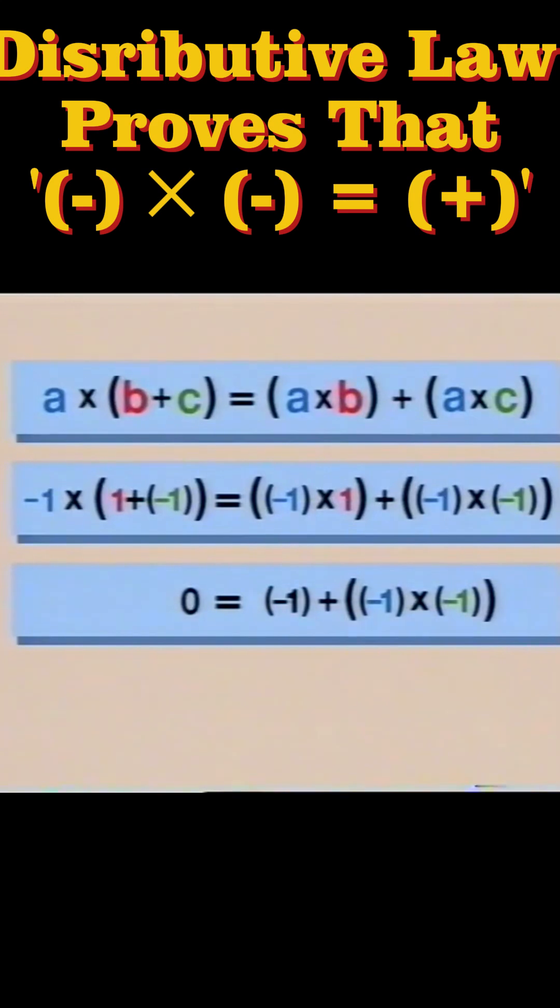Now the left-hand side is just 0. And the right-hand side is minus 1 plus minus 1 times minus 1. Adding 1 to both sides gives 1 equal to minus 1 times minus 1.